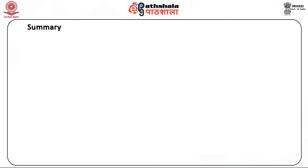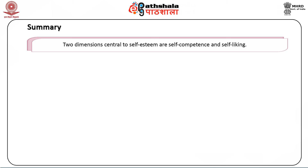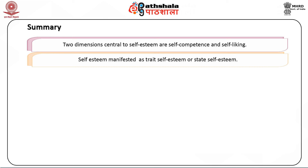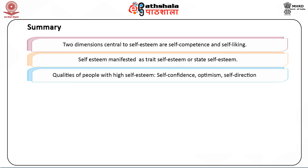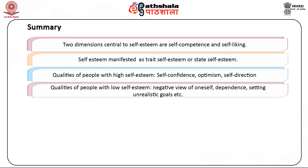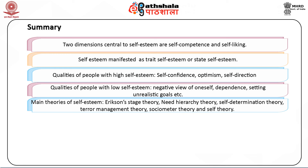In summary: self-esteem is the positive or negative evaluation of oneself. Two dimensions central to self-esteem are self-competence and self-liking. Self-esteem is manifested as trait self-esteem or state self-esteem. Qualities of people with high self-esteem include self-confidence, optimism, and self-direction. Qualities of people with low self-esteem include negative view of oneself, dependence, and setting unrealistic goals. Main theories of self-esteem are Erikson's stage theory, need hierarchy theory, self-determination theory, terror management theory, sociometer theory, and self-theory.